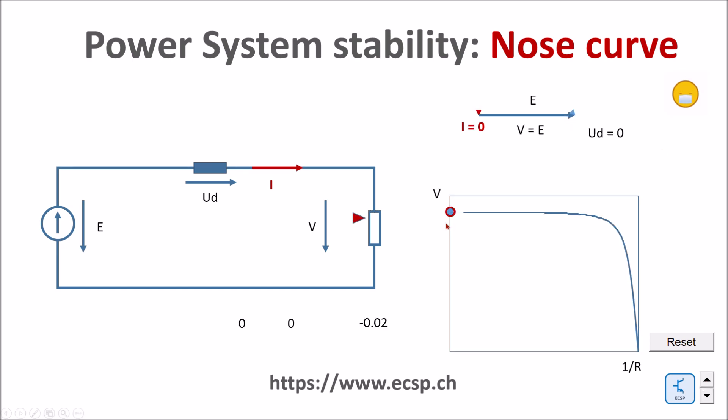I do the same thing as before now, but this time I draw the voltage as a function of one over R. Meaning that if the resistance at the load is very high, I'm at zero here. And if the resistance is very small, I get to the right side of this graph. So let's do the game. You see how the voltage is decreasing and finally it collapses.